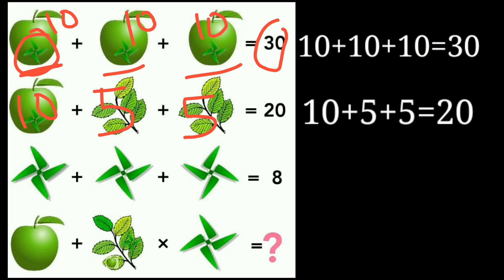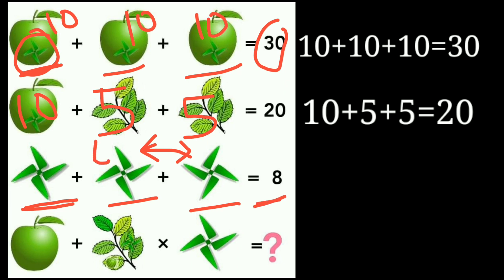Now look at the third equation. There are two leaf fans, but if you observe properly, these two are different — totally different, on opposite sides. So what is the value of these two? We need them to equal 8. This one is 4, and this one is minus 4 because they are on opposite sides. 4 plus minus 4 equals 0, so the two leaf fans give a value of 8.